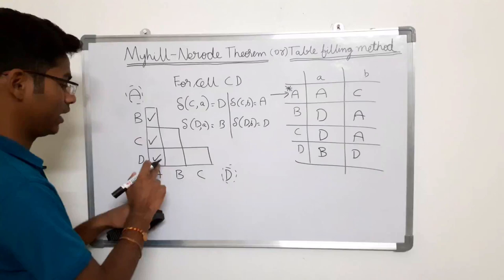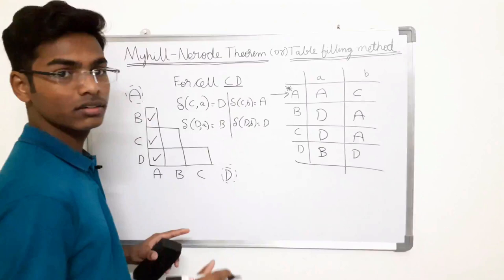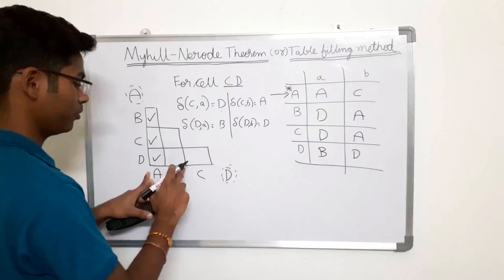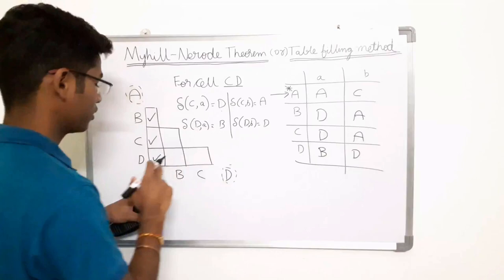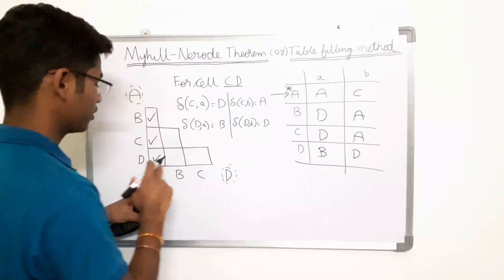Check if A,D is marked in the table — A,D is marked. The rule says: if any one of the resulting pairs is marked, then mark the current cell C,D. Since A,D is marked, mark cell C,D.